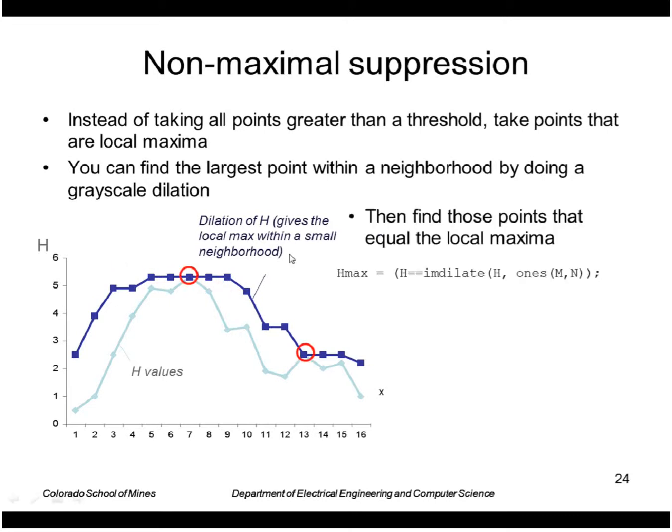We can then test to see where the dilation equals the original values of H using this expression here. Basically where H equals, for a test for equality, the dilation of H with a structuring element. Here I'm using a box of ones size M by N. That returns true wherever I have points that are equal. And finally I'll also want points that are greater than the threshold, so I'll AND that result with the test for H greater than threshold. I'll put the result into something called H peaks, which has a value of true wherever I have both of these conditions satisfied.